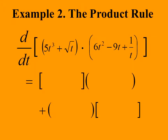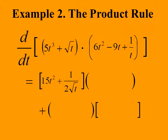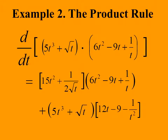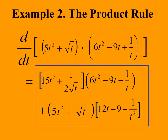First, we know the form of the derivative since we will apply the Product Rule. We need the derivative of the first function, which is 15t² + 1/(2√t). Next, we write the second function. After the addition, we write the first function. Finally, we multiply by the derivative of the second, which is 12t − 9 − 1/t². With the square brackets, we see where all the parts of the derivative come from, so we put a box around the answer in its current form.